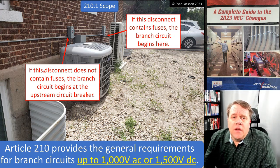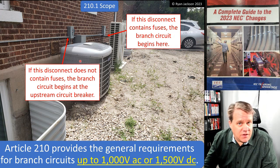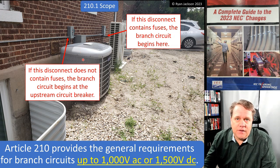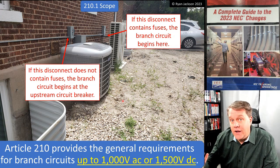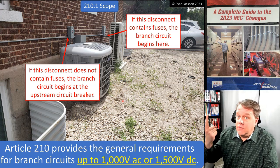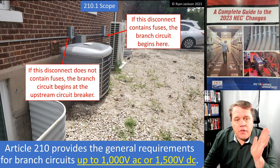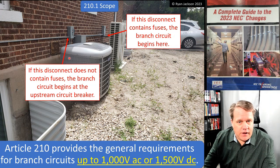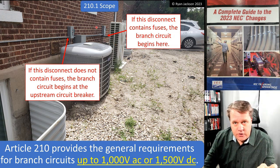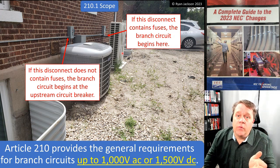In this photograph, if this disconnect does not contain fuses, then the branch circuit started at the panelboard inside and extends through the disconnect to the equipment — because where that liquid-tight flexible metal conduit meets the equipment, that is the outlet. The switch is not the outlet; where it ties into the utilization equipment is the outlet. Just like a lighting outlet — the switch is not the outlet, the box in the ceiling is the outlet. The branch circuit starts at the last breaker or fuse and ends at the outlet. If this disconnect had fuses in it, then from the panelboard to the disconnect would be a feeder circuit, and from the fuse disconnect to the outlet would be a branch circuit.